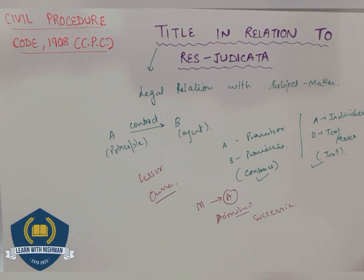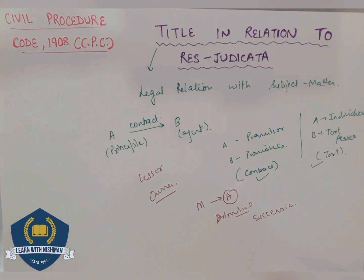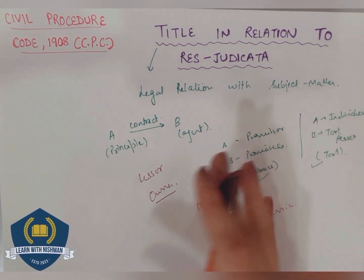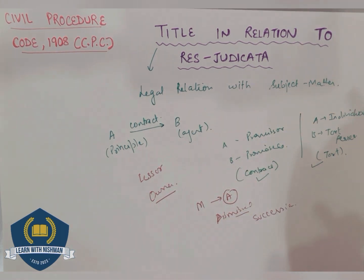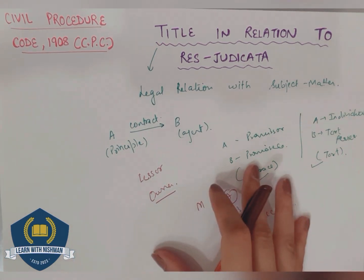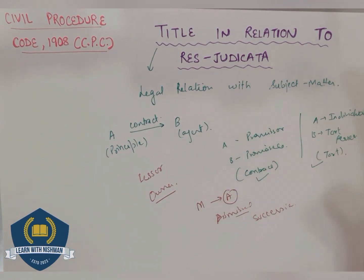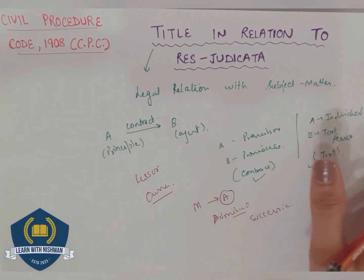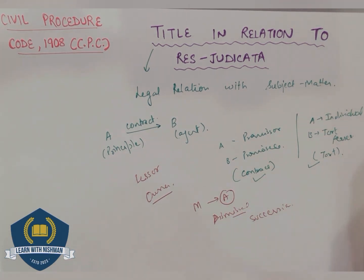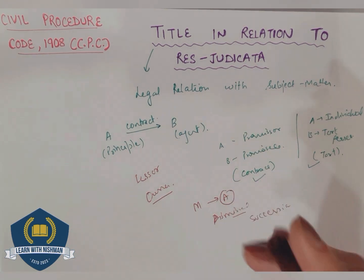One person can have two different legal capacities over property. For example, you can be a mortgagee as per contract, and you can also be an owner for the rest of the world. As an owner, he can claim possession — that is why the title will be different. Suppose A filed a suit against B claiming redemption of a mortgage — suit dismissed. Later, he filed a suit against B claiming possession as an owner. In the first case he was a mortgagee; this time he is an owner. Will res judicata apply? No, not at all. The title is different.